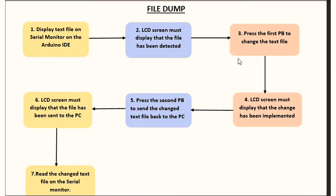When I press the first push button I should be able to change the text file, and on my LCD screen I'll read that the change has been implemented. When I press the second push button I should be able to send that changed text file back to my PC, and on my LCD screen I'll read that the file has been sent. Lastly, I should be able to read the changed text file on the serial monitor and observe it.